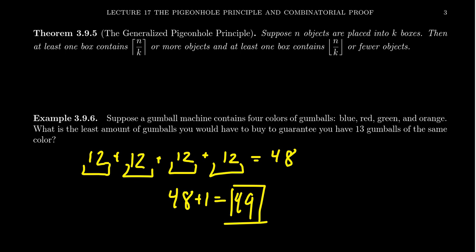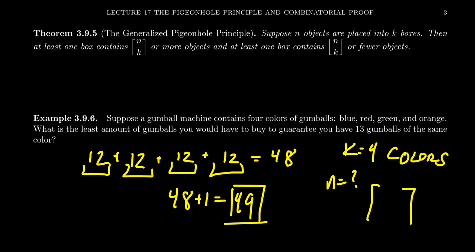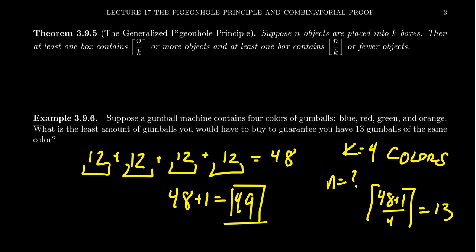So when you reach the 49th gumball, you are guaranteed a 13th gumball of the same color. Where did this 49 come from? We have K equals 4 colors as the boxes. Using the ceiling: the ceiling of 49 over 4 equals the ceiling of 12.25, which gives 13. So 49 is the smallest number of gumballs where everyone is guaranteed a 13th gumball of the same color.